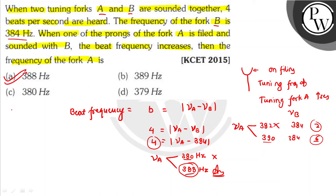The answer will be option A, the frequency of tuning fork A is equal to 388 Hz. This is our correct answer. I hope you understood it well, best of luck.